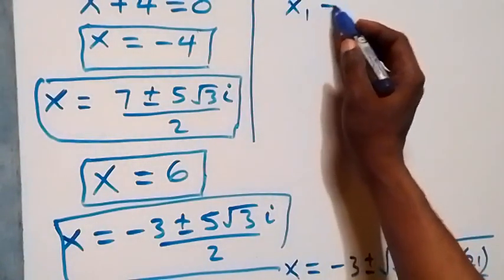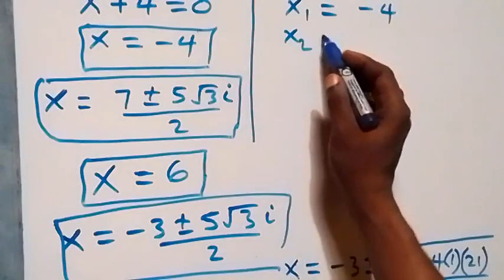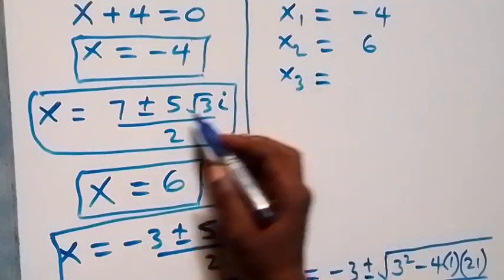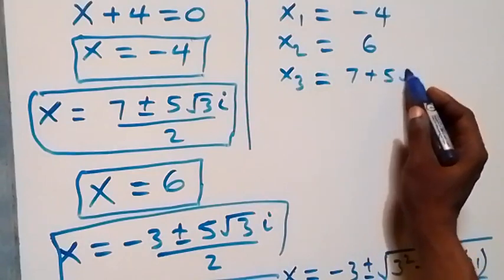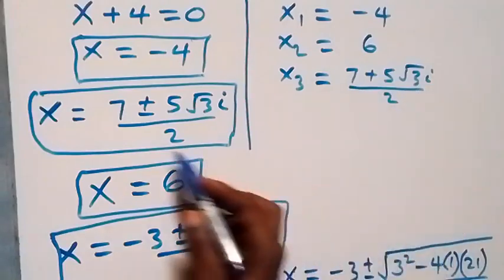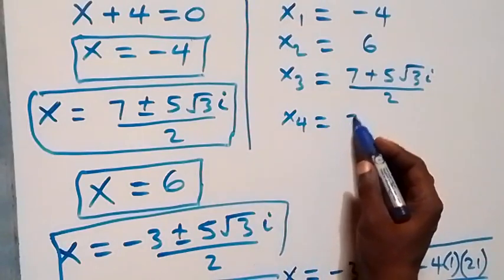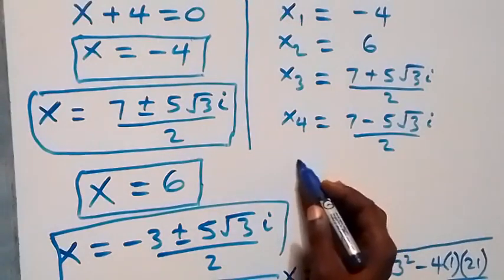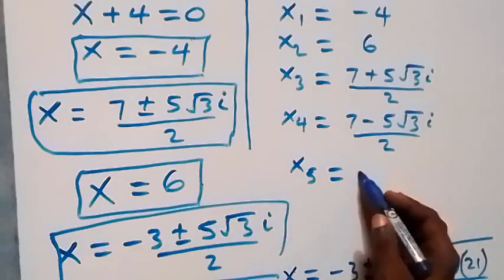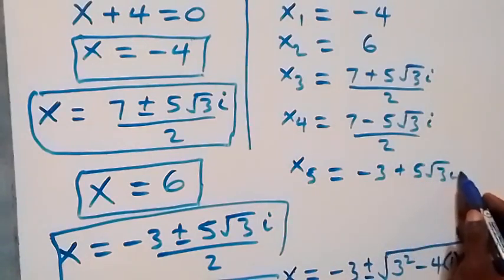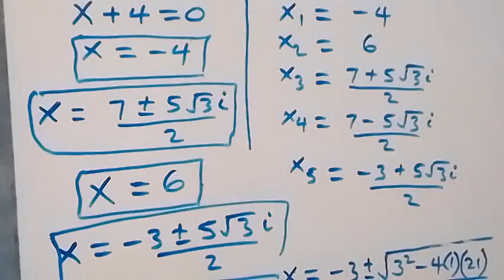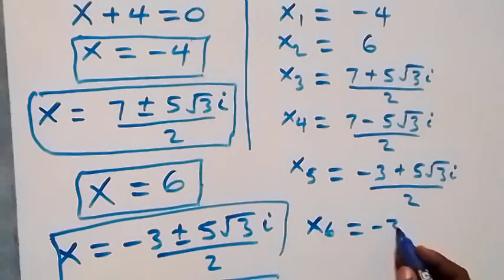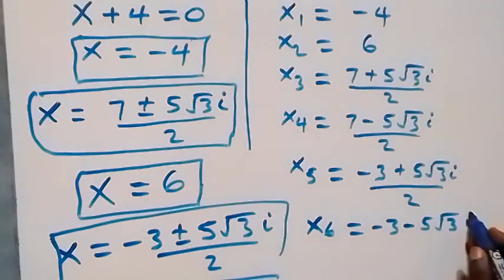We can write them out: x₁ equals minus 4 (real solution), x₂ equals 6 (real solution), x₃ equals 7 plus 5 root 3i over 2, x₄ equals 7 minus 5 root 3i over 2, x₅ equals minus 3 plus 5 root 3i over 2, x₆ equals minus 3 minus 5 root 3i over 2.